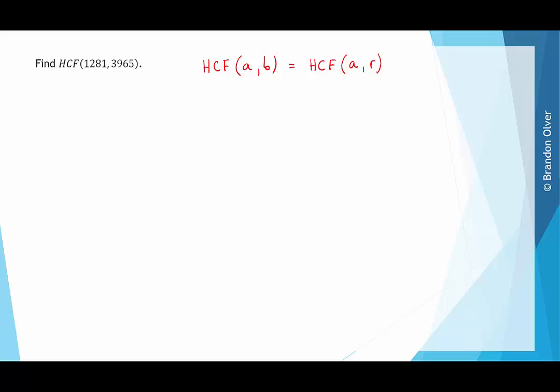Let's have a look at that in action. The first step is to write 3,965 in terms of 1,281 times some number plus a remainder. The idea is that the remainder must be positive. So, we need to multiply 1,281 by a number that gives a product less than 3,965. We can multiply it by 3, which gives a remainder of 122. So, 3,965 is equal to 1,281 times 3 plus 122.